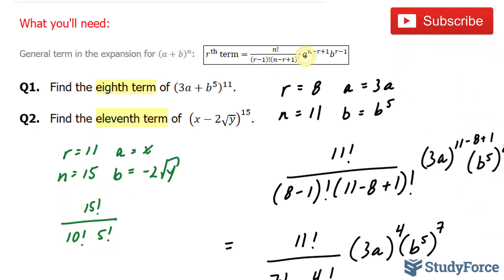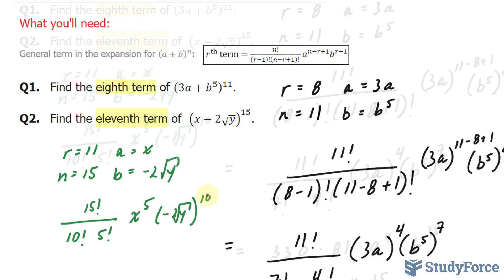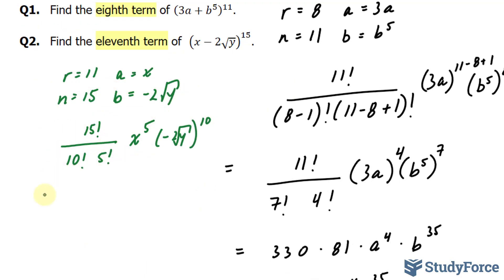And this gets multiplied to a to the power of n minus r plus 4. So we have x to the power of 15 minus 11, 4 plus 1 is 5. And b is negative 2 times the square root of y to the power of r minus 1, which is 10. Let's use our calculator to evaluate this part.